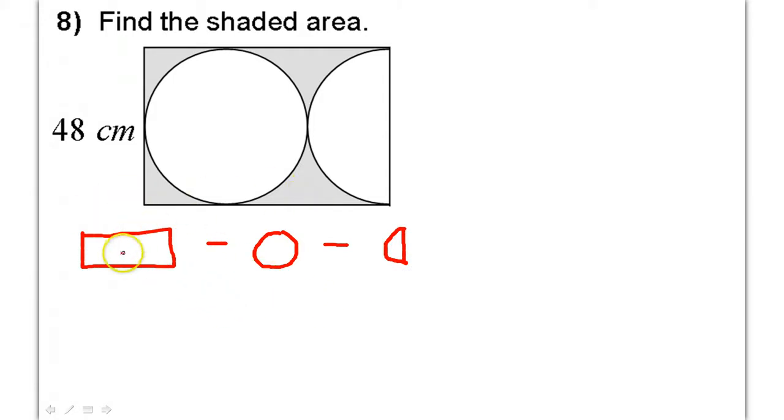Once again, the formula for the area of a rectangle is base times height. When it comes time for the circle, we will be doing pi r squared. When it comes time for the semicircle, we'll be taking the pi r squared that we did over here, but we'll just take half of it.